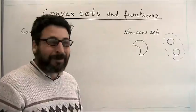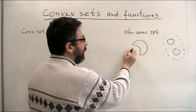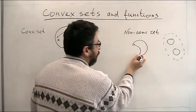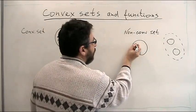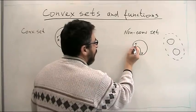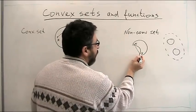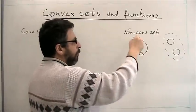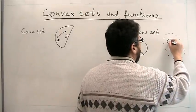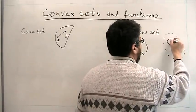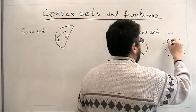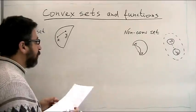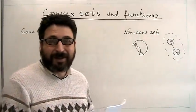Then the set is convex. How can we see that this set is non-convex? I can choose such x and y where the connecting line will not belong to this set. So how can I write it in an algebraic way?